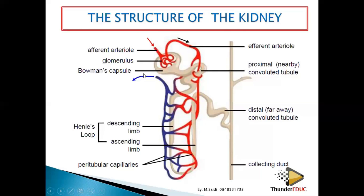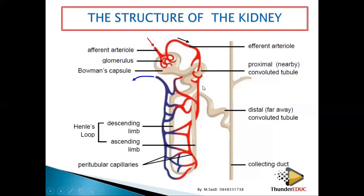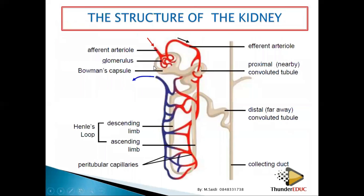Now let's look at some functions of the parts of the nephron. You need to know that the nephron is the functional unit of the kidney. It has specialized cells called podocytes lining the Bowman's capsule.